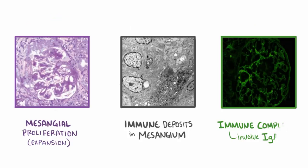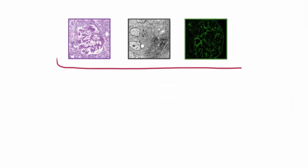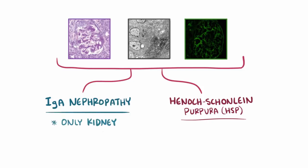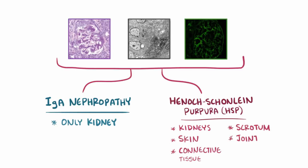These findings can also be found in another IgA-mediated disease called Henoch-Schönlein Purpura, or HSP, except that in IgA nephropathy only the kidneys are involved, whereas in HSP the kidneys can be affected as well as the skin, connective tissue, scrotum, joints, and GI tract.